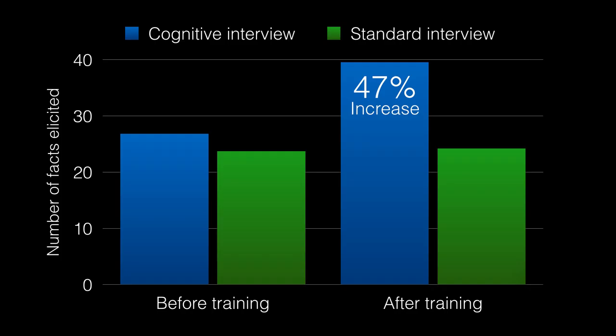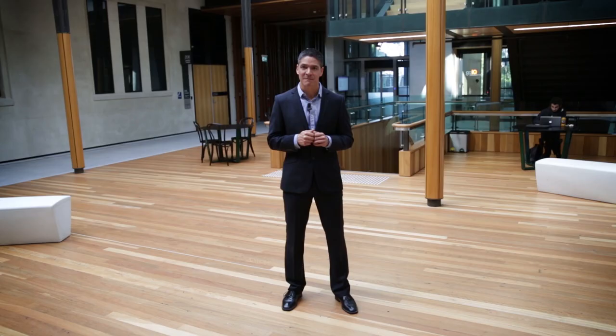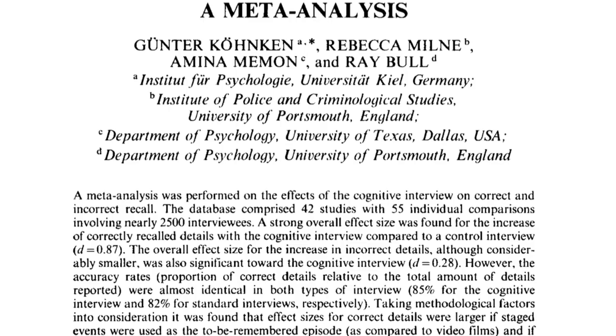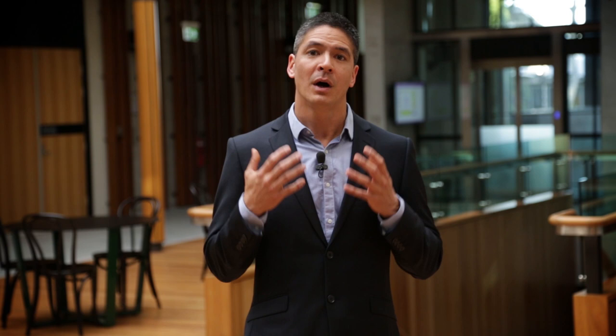The cognitive interview in this real-world study led to a 47% increase in the number of facts recalled compared with a standard police interview. There has since been a large body of research on these techniques. A meta-analysis by Gunter Koenken of the University of Kiel and colleagues, covering 42 studies, confirmed that the cognitive interview reliably generates more correct details than the standard interview, and this effect was greater the more realistic the context of the study.